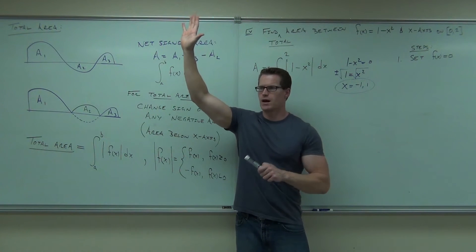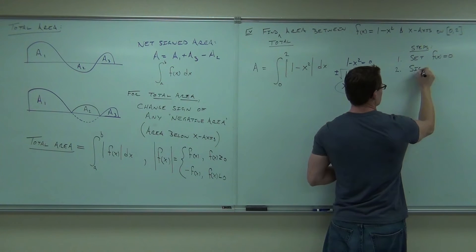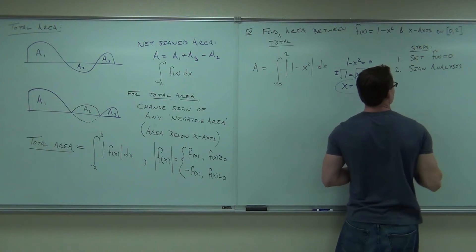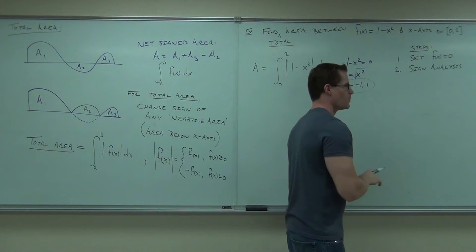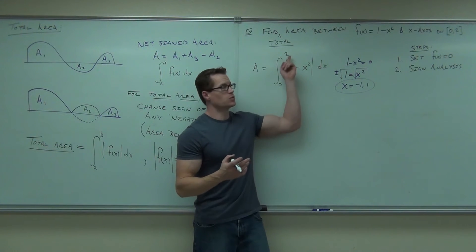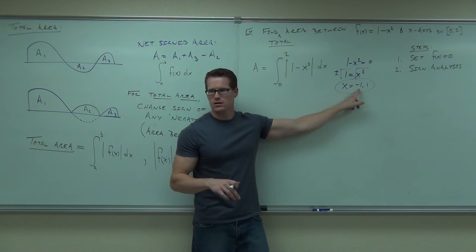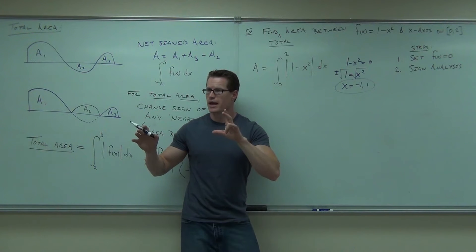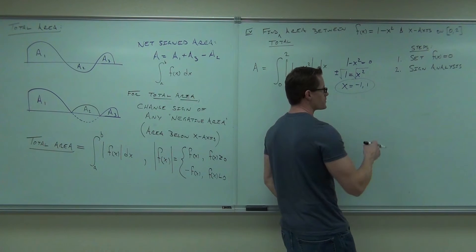Raise your hand if you're okay with this so far. Now the next step: you've got to do a sign analysis test. You only need a few of these points — your endpoints and whatever x-intercepts fall within those endpoints. The negative one? You don't need that one — it's not within the constraints. So make the sign analysis with your endpoints and your x-intercepts that fall within those endpoints.